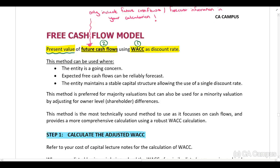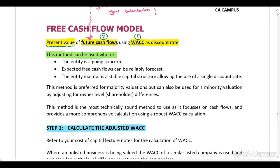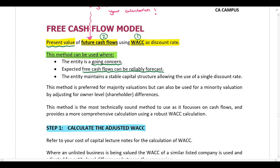When can this method be used? First, the company must be a going concern. Second, we need to be able to estimate or forecast our free cash flows reliably. If we can't calculate our future free cash flows we can't use this method, because we are trying to calculate the present value of those future cash flows.